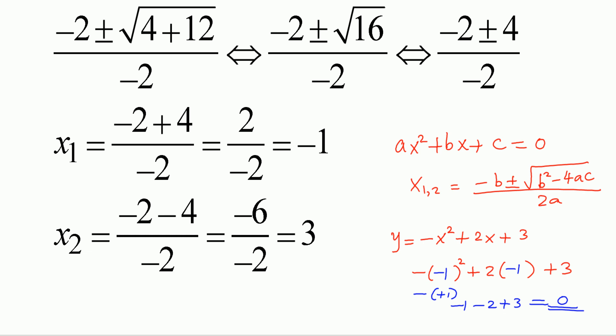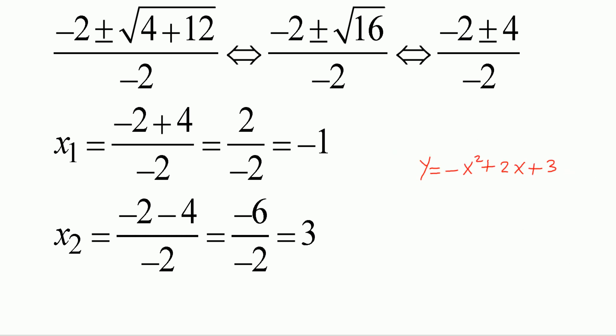So even though we were given negative x squared plus 2x plus 3 is equal to 0, one of the possibilities is that you can set that as equal to y and set it equal to 0. When we set y equal to 0, we have the x-axis. So when we solve for x, we get the x-intercepts.